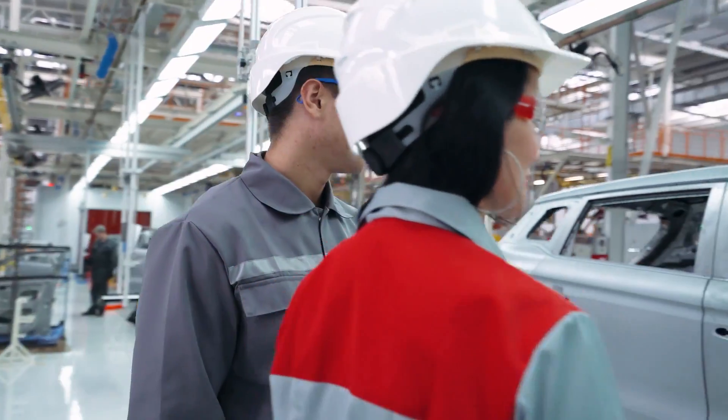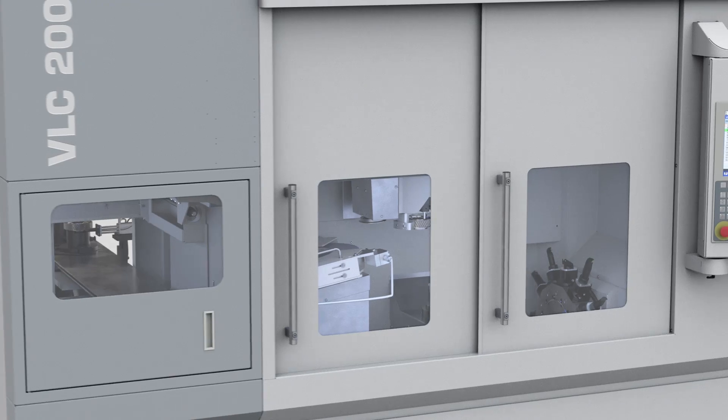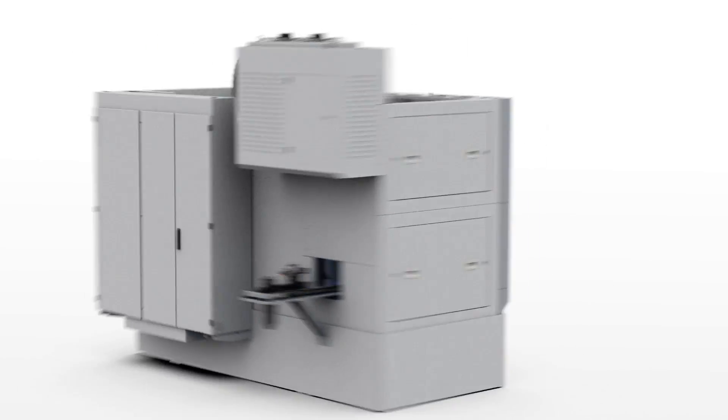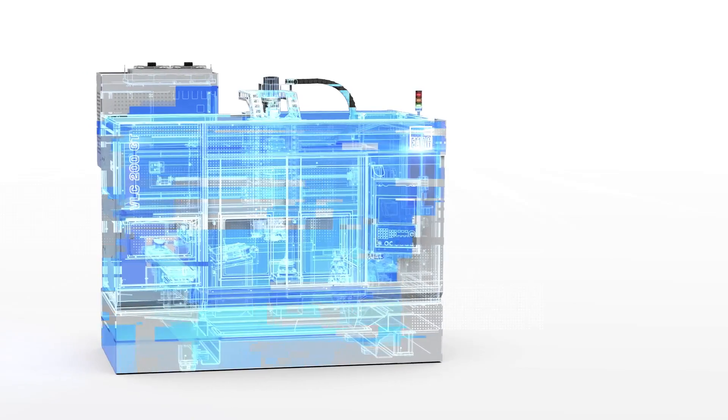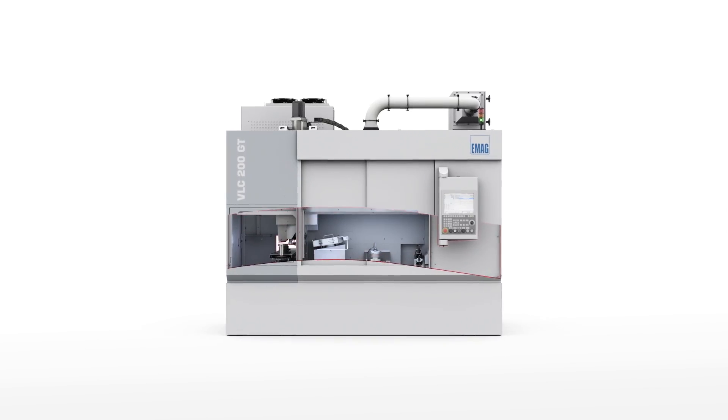The question is now, how can these be efficiently produced? Emag has developed the VLC-200GT for the hard machining of these components, a compact vertical turning grinding machine that can be used for the production of a wide variety of components.